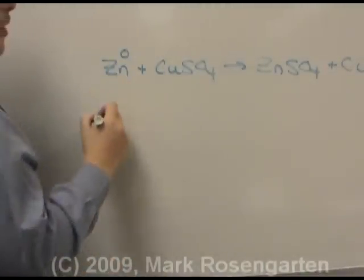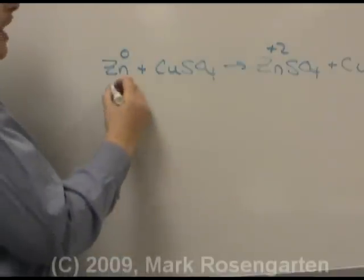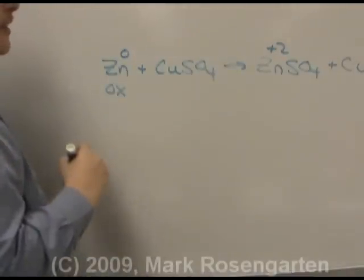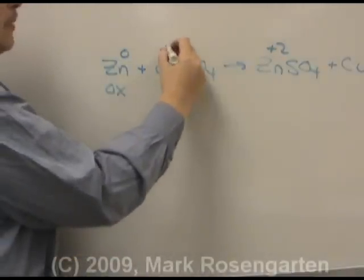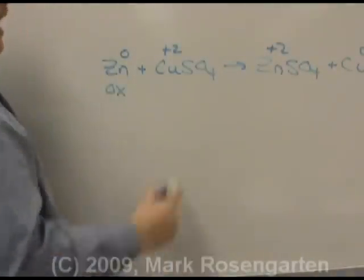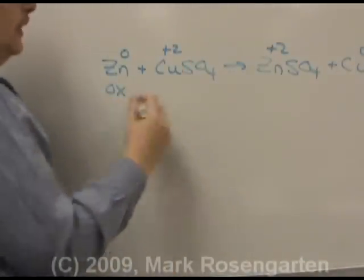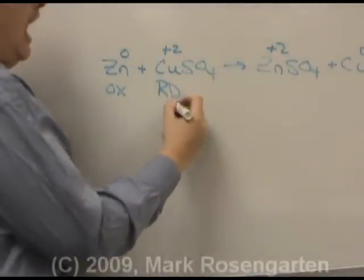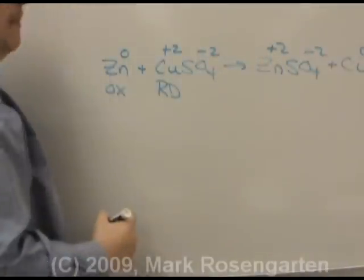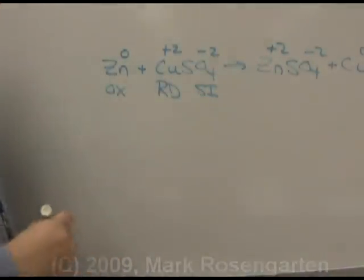Zinc started off as zero and ended up as plus two — it was oxidized as it lost both its valence electrons. The copper started as plus two and ended as zero; its charge went down as copper gained two valence electrons. The sulfate remained minus two on both sides, making it a spectator ion.